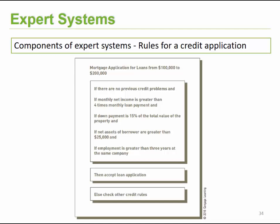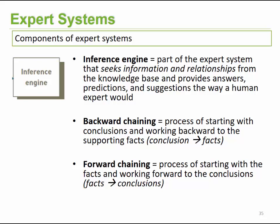The next component is the inference engine. The inference engine is a part of the system that seeks information and relationships from the knowledge base and provides answers to the user. It can work with one of two techniques. The first is backwards chaining, which starts with the conclusions and works backwards to the supporting facts. On the other hand, with forward chaining, you have the facts and want to reach a conclusion using those facts.